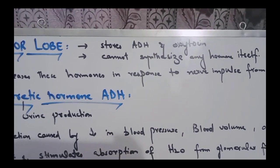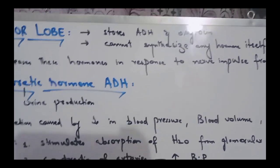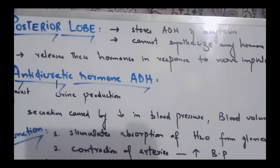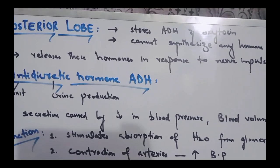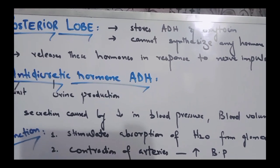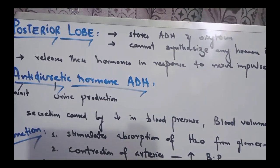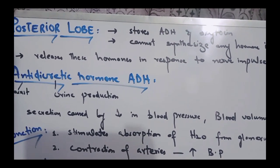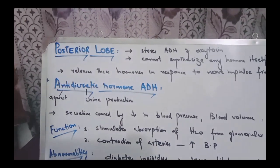The posterior lobe cannot synthesize any hormone itself — it has no capability to make hormones on its own. It only stores them. It releases these stored hormones in response to nerve impulses from the hypothalamus, which is a part of the brain.